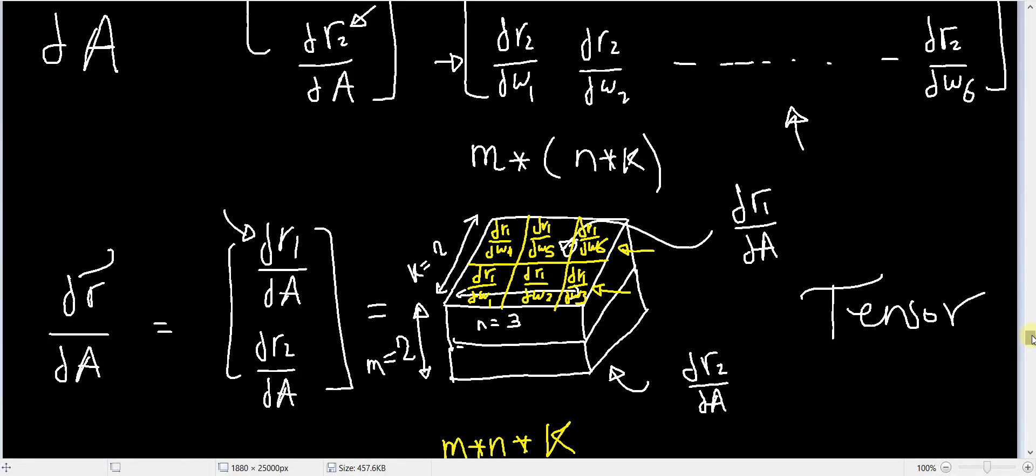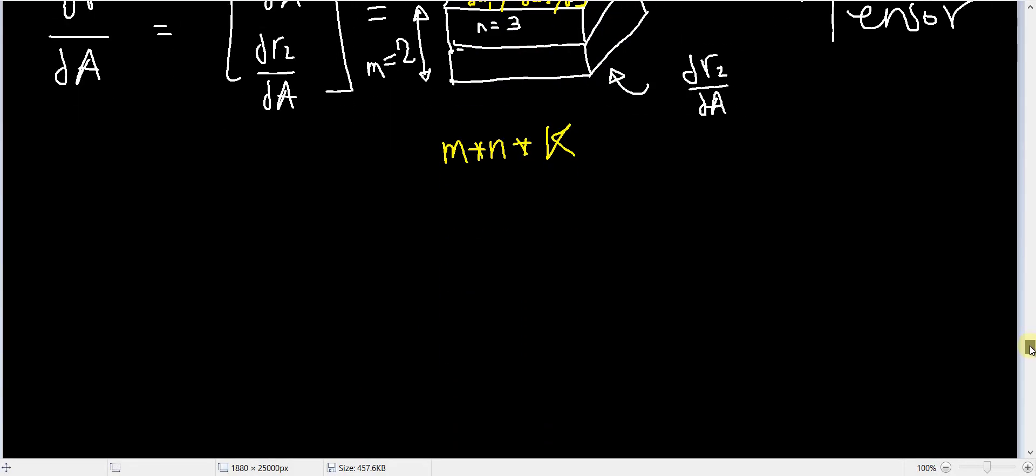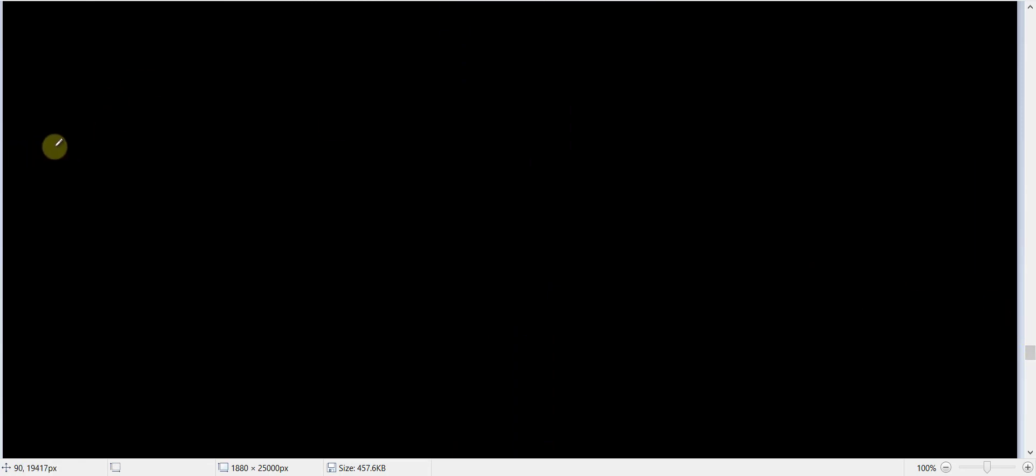Similar to this, we can also define the derivative of a matrix with respect to a matrix. Suppose you have a matrix A having, let's say, four elements: A1, A2, A3, and A4.